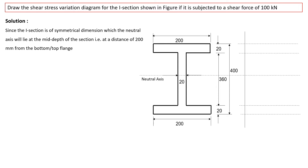The depth of the web is 360 mm. Since this is a symmetric I section, the neutral axis will lie at the mid-depth of the section. The overall depth is 400 mm, so due to symmetry, the neutral axis lies at 200 mm from the bottom or top flange.